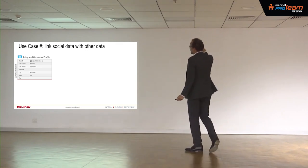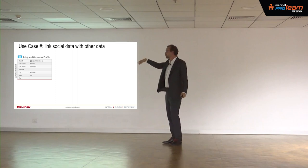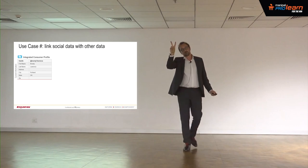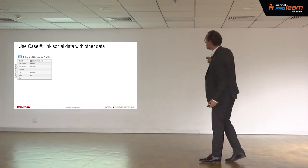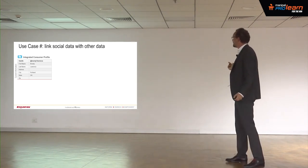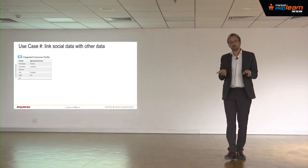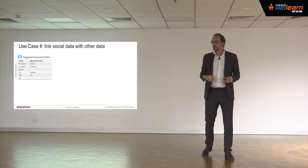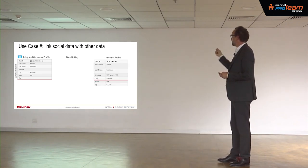When you have a tweet, you have header information attached to it. You know the name — the nickname, the first name and the last name. So this person is called Brandy Lawrence, and you know that they live in Portland, Oregon, in the US.